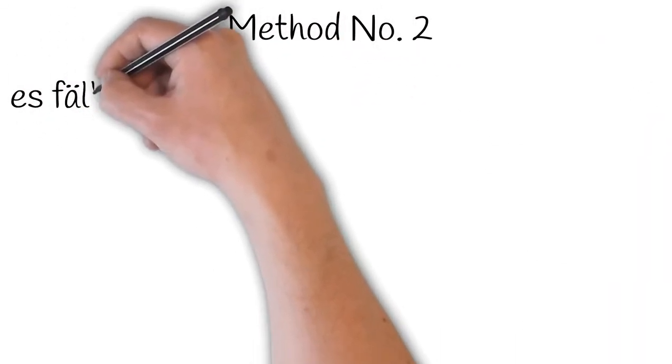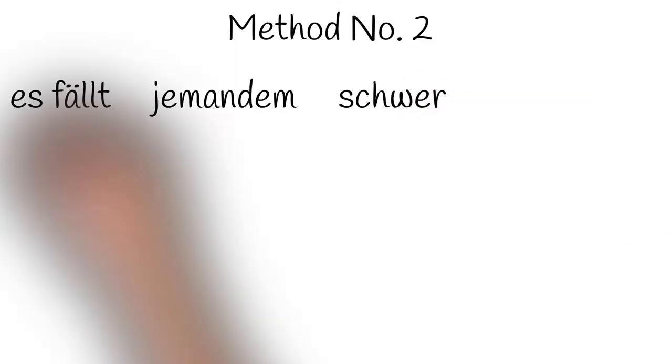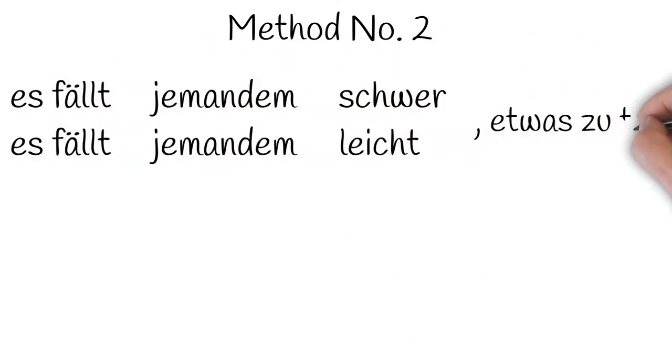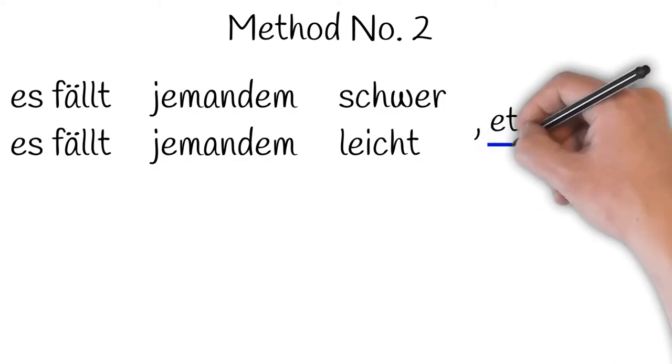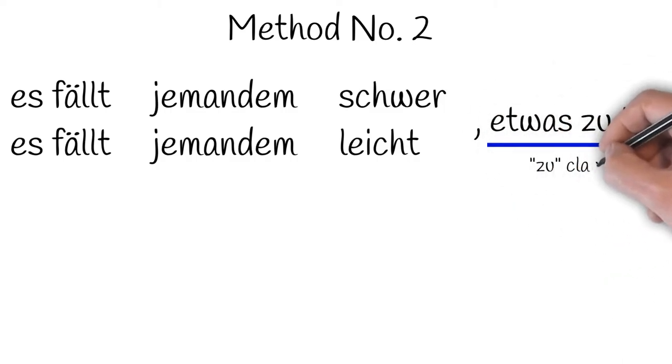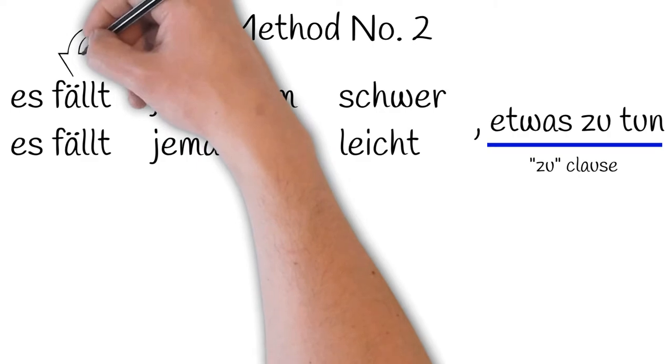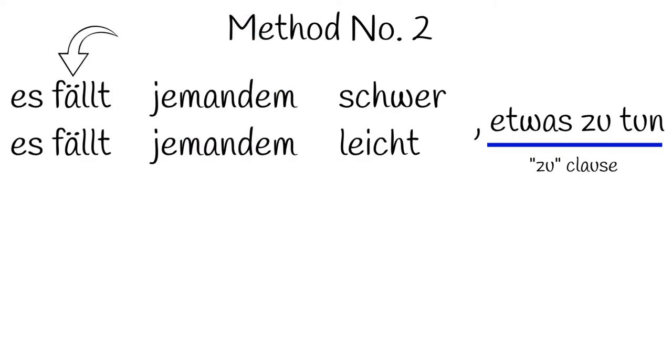Now let's look at method number two. Once again, we're finishing with an unchangeable zu clause, but we're using a different verb in the conjugated clause with this method. We're using the verb fallen. Why does it have an umlaut if the infinitive is fallen? Well, you might remember that this is in fact an irregular verb.